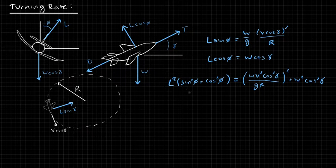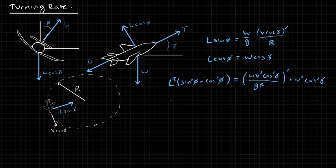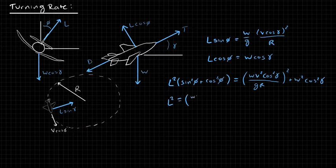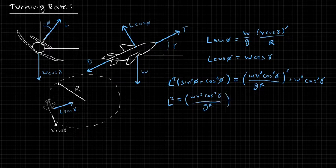So this is an identity that sine squared phi plus cos squared phi is equal to 1. So we can rewrite this, simplify it out, as L squared equals W V squared cos squared gamma divided by G R, all squared, plus W squared cos squared gamma.